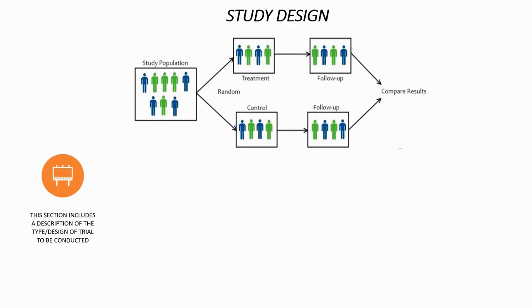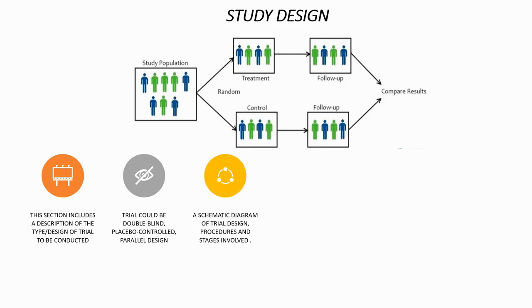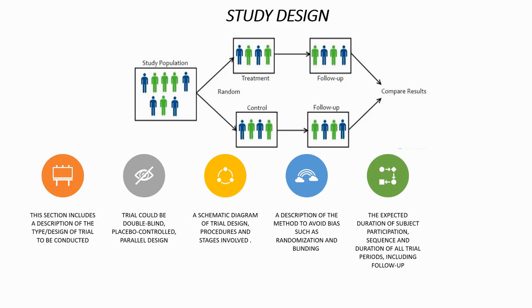Study design. This section includes a description of the type or design of trial to be conducted. The trial could be double-blinded, placebo-controlled, or parallel design. A schematic diagram of the trial design, procedures, and stages involved are described in this section. A description of the method to avoid bias — such as randomization and blinding — is followed. The expected duration of subject participation, sequence, and duration of all trial periods including follow-up is mentioned. A complete treatment regimen will also be described in this section.